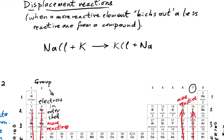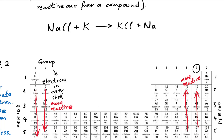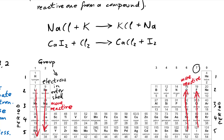That can happen with metals but it can also happen with non-metals as well. Let's say we have calcium iodide - CaI₂, because calcium needs to give away two electrons and each iodine needs one. But then we're reacting it with chlorine, Cl₂. We can see that chlorine is higher up group seven than iodine, therefore it's more reactive, so it's going to kick out the iodine. We're left with calcium chloride and the iodine is left out.